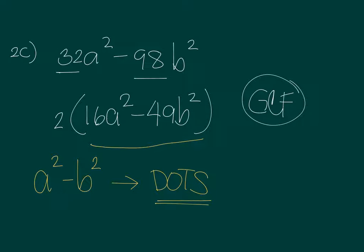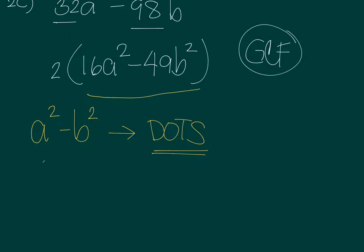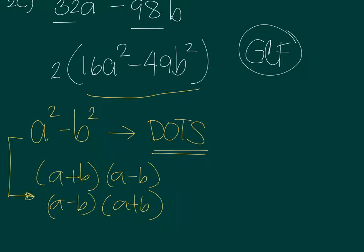If it's a difference of two squares, then the factored form is just A plus B times A minus B or you could have the other order A minus B times A plus B. And if you remember, we have seen this equivalent expressions when we were trying to expand algebraic expression. So it's just the reverse of what we have been doing in the expansion.